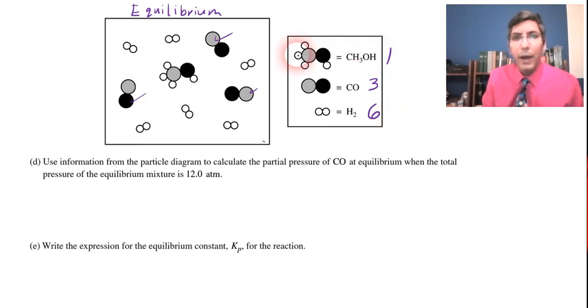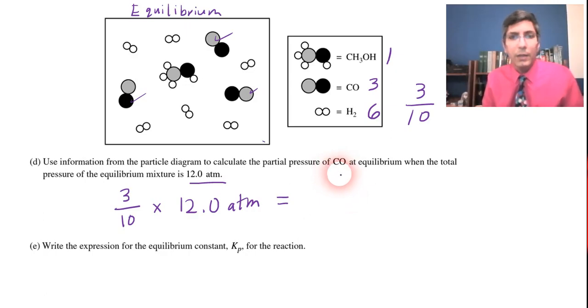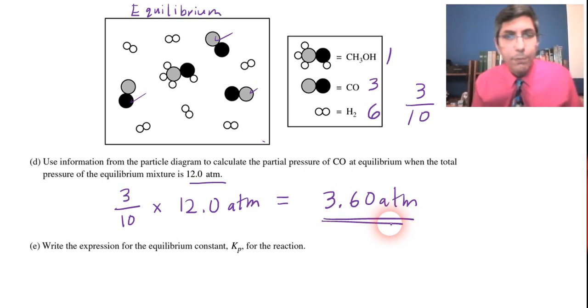So that tells me that out of the full equilibrium mixture here, three tenths or three out of every 10 molecules will be carbon monoxide. So that means that if three tenths will be carbon monoxide and the total pressure is 12 atm, well, all I have to do is multiply that out to find out what the partial pressure of carbon monoxide is going to be at equilibrium. So when I multiply that, I get an answer of about 3.60 atm.